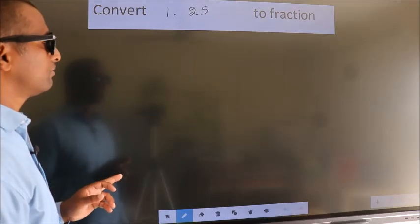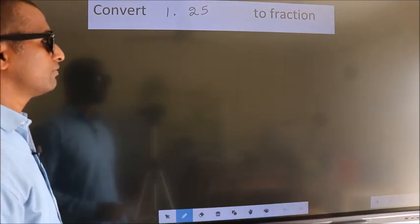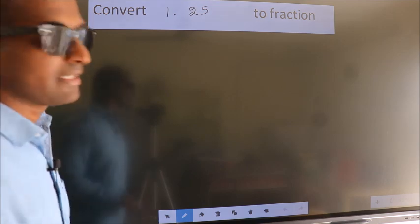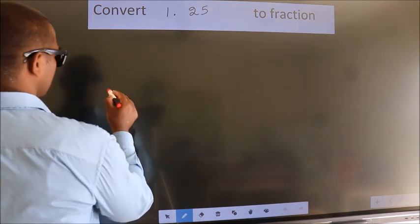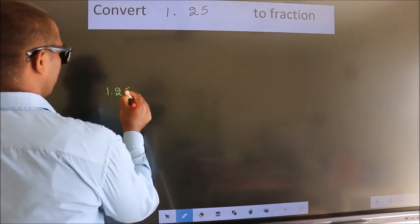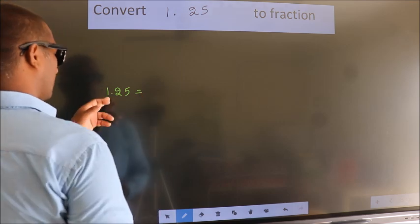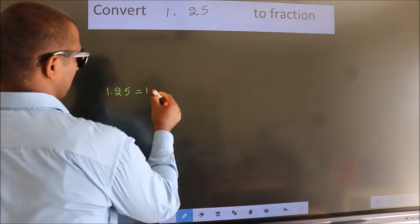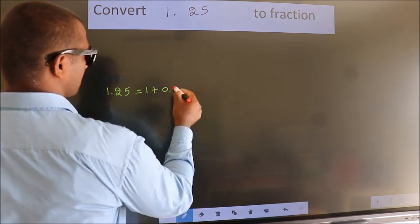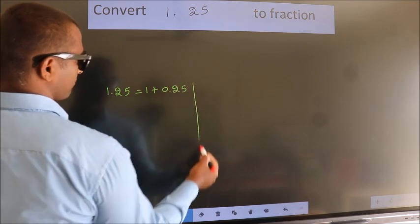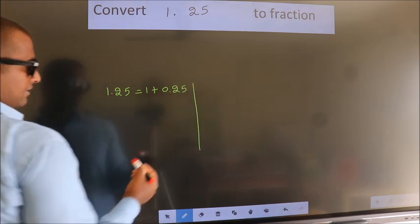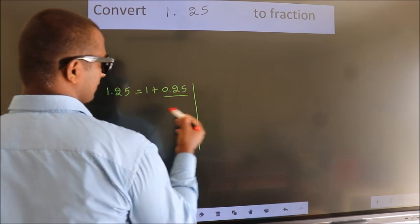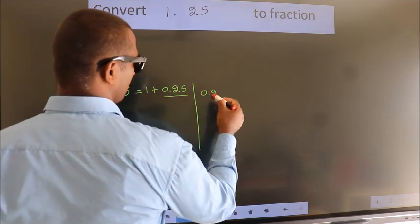Convert 1.25 to a fraction. Given is 1.25. We break this into 1 plus 0.25. Next, we should convert this to a fraction. So 0.25 here.